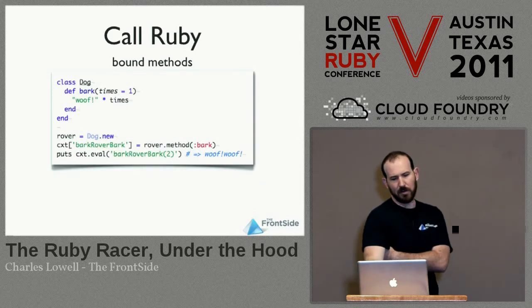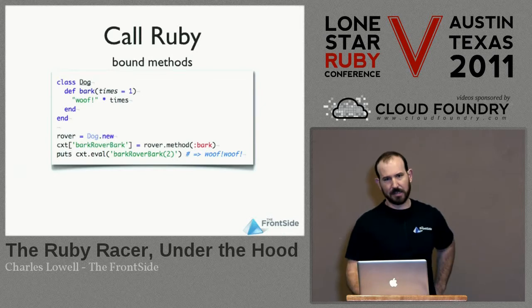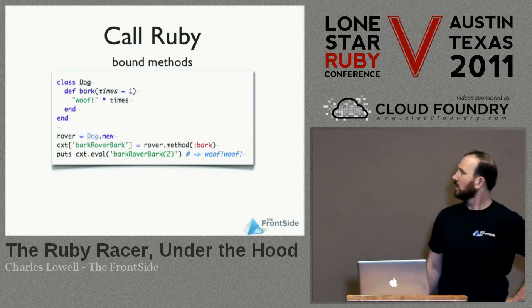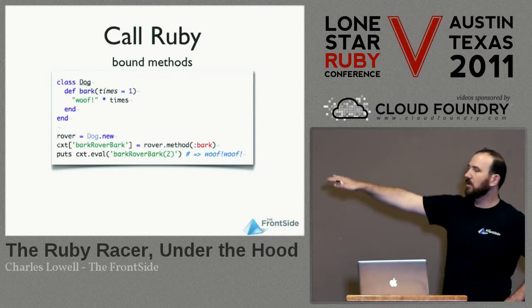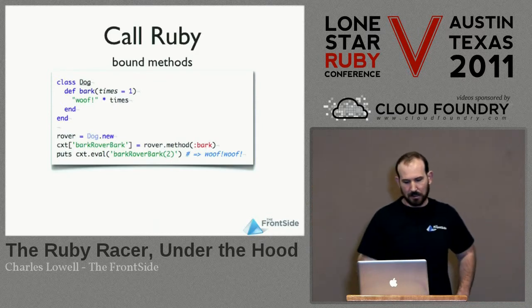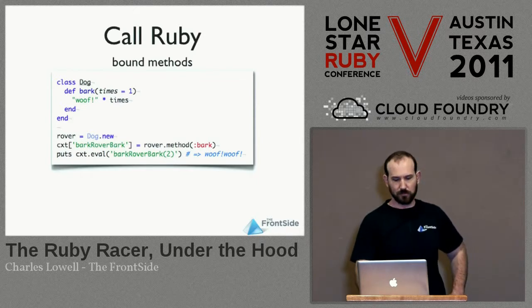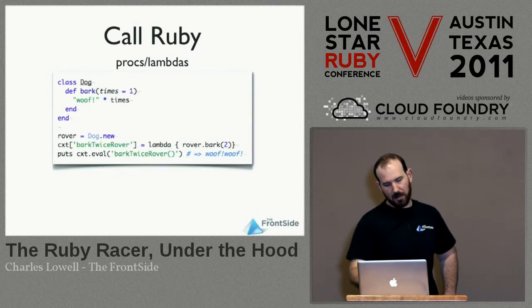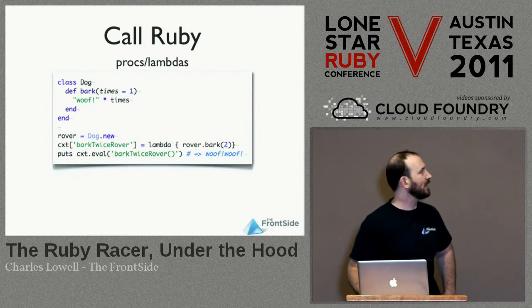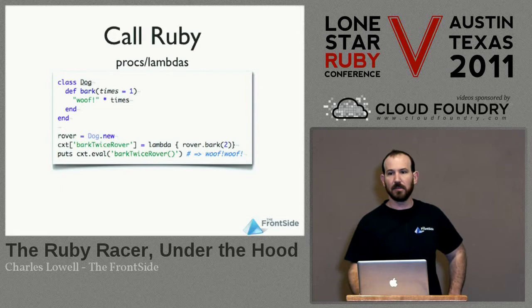You can do the same thing without embedding the full instance. I can just take a bound method — peel the bark method off the dog object — and embed just that in the context. And I can evaluate that from JavaScript. Same thing with procs and lambdas: I can define a lambda and stuff it right inside the context, and then it's available from JavaScript.